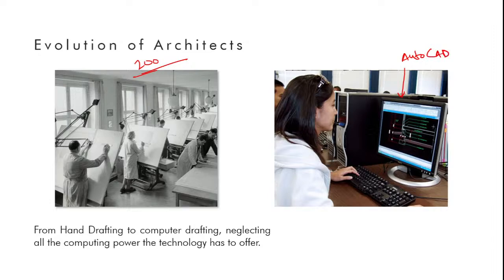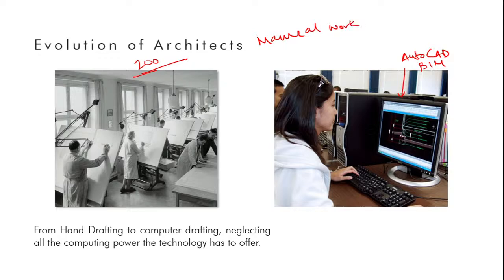Things have evolved — now we have tools like AutoCAD and BIM tools where scale is no longer an issue. A person sitting in front of a single computer can design something as small as a bedroom or as large as Burj Khalifa in terms of scale. Earlier, architects took a ruler and drew a line manually; now we type 'L' and hit Enter on CAD systems. But the manual decision-making process is still very much present.